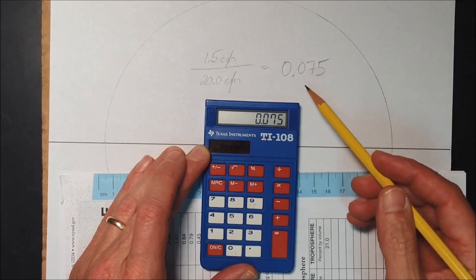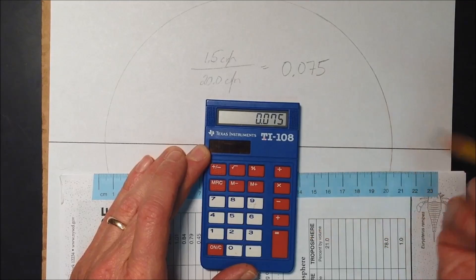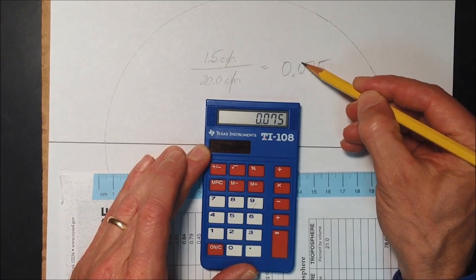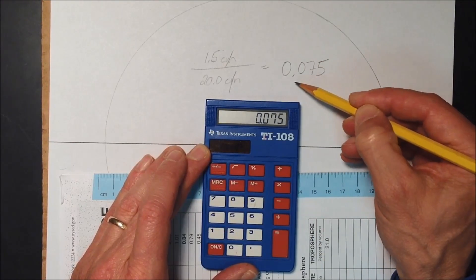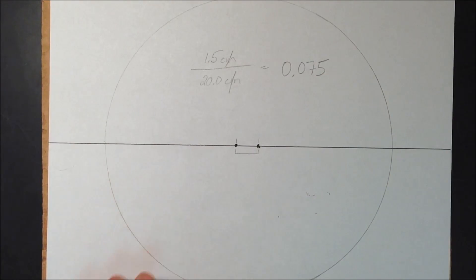That is 1.5 divided by 20.0, and it is 0.075. We usually want to express it to the thousandth three decimal places, and that's actually what my calculator did, so I didn't have to round it. Now that number is very close to zero because it's 0.075, which means it does not differ that much from a perfect circle.